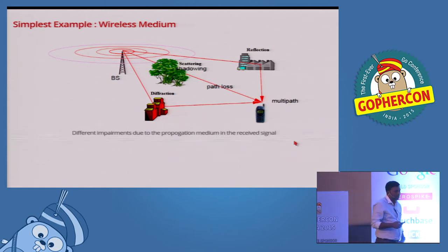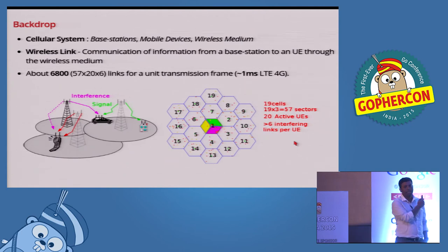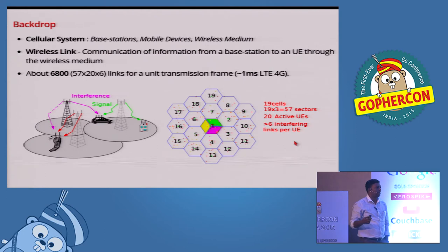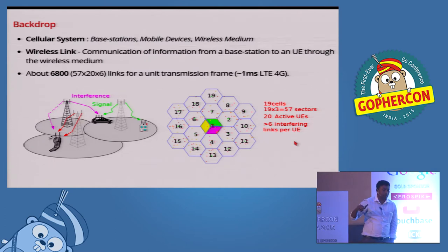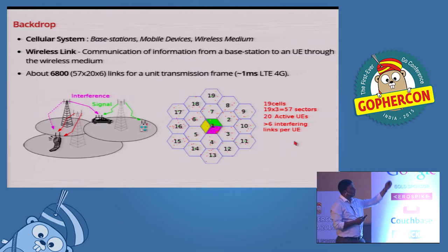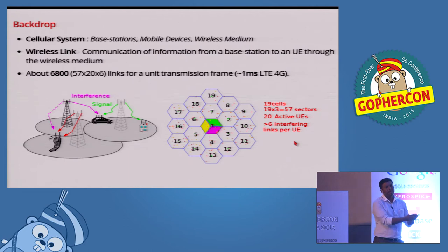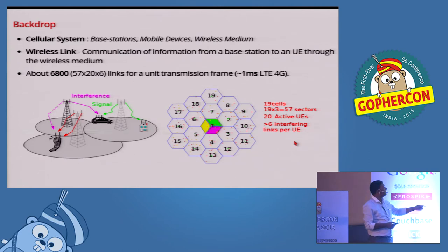Whenever we simulate a wireless system there are three major components: the base station, the mobile, and the wireless channel. Within the base station there are many modules — to simulate the impact of a particular receiver algorithm under FTP traffic or video streaming with a user moving at vehicular speed, we need to model right from the bits generated, through encoding, into a CDMA or 4G system, then to the antenna. In between is the wireless channel.